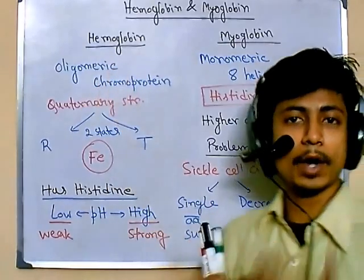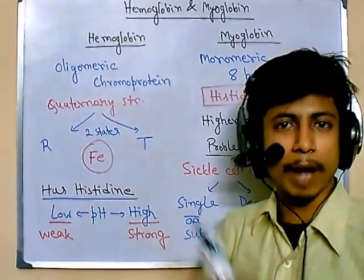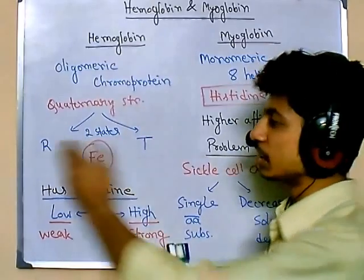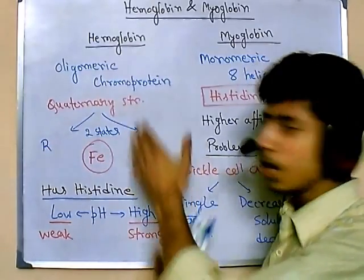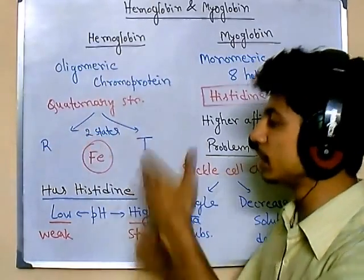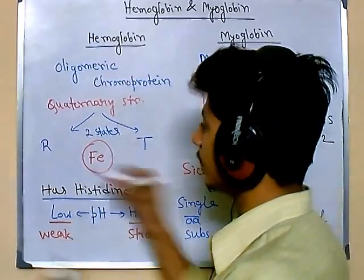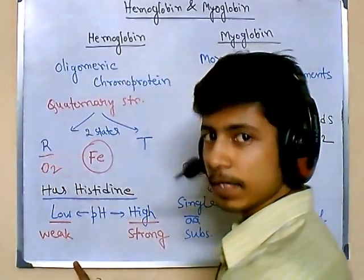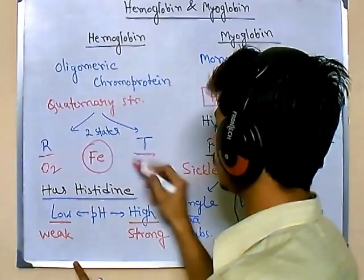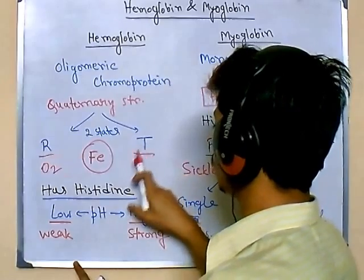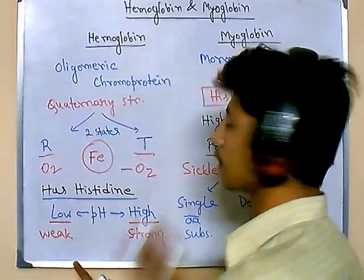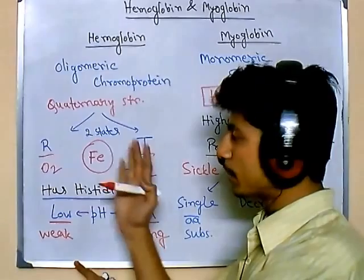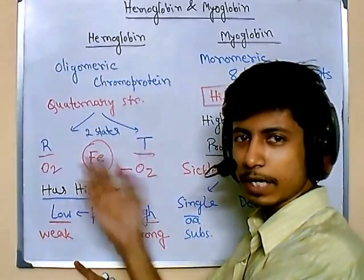The structure of hemoglobin can be altered due to the binding of oxygen. It has two different forms: the R state and the T state. When hemoglobin is bound with oxygen it is called the R state. When there is no oxygen — the minus oxygen state — it is the T state. Keep this in mind as many exam questions come from this.